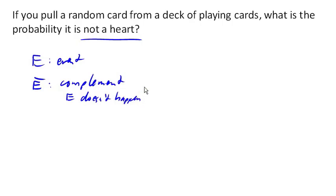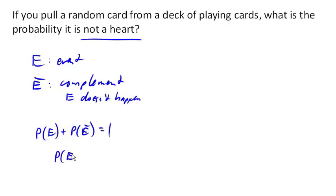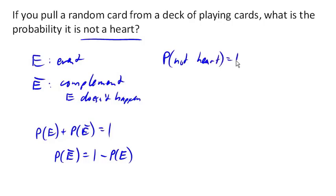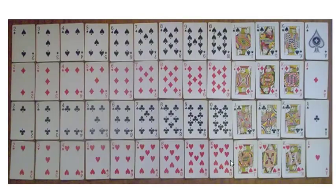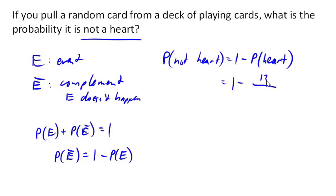Because the probability of something happening is 100%, or 1, the probability of an event happening and the probability of the event not happening need to add up to 1. So the probability of an event not happening is 1 minus the probability of the event happening. The probability of not getting a heart is 1 minus the probability of getting a heart. There are 13 hearts out of 52 cards, so 1 minus 1/4 equals 3/4 — a 75% probability of not getting a heart.